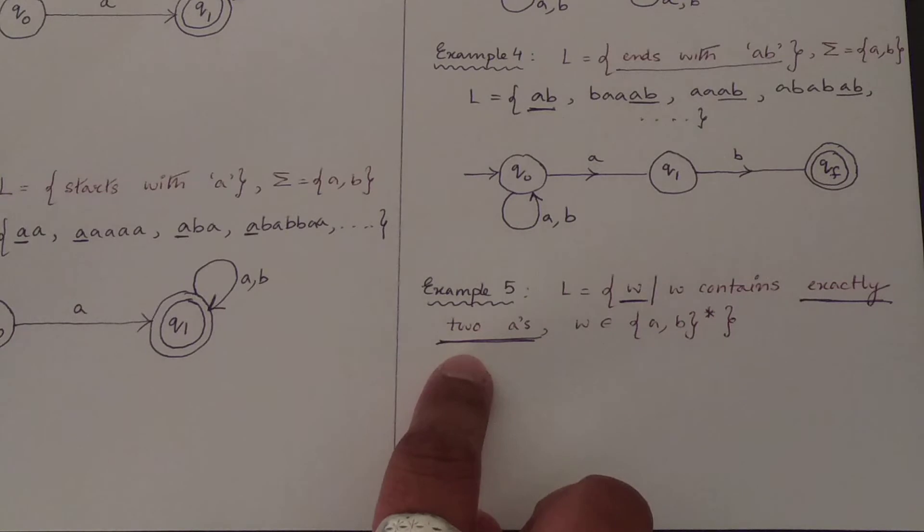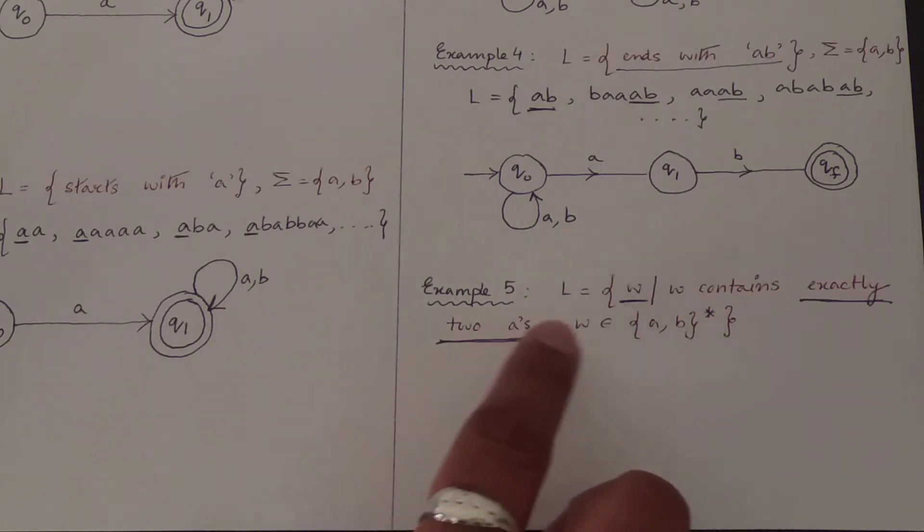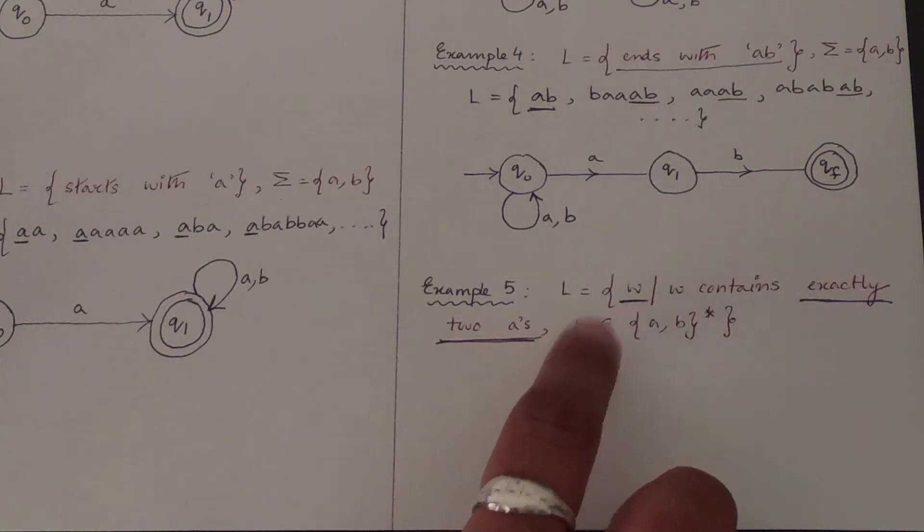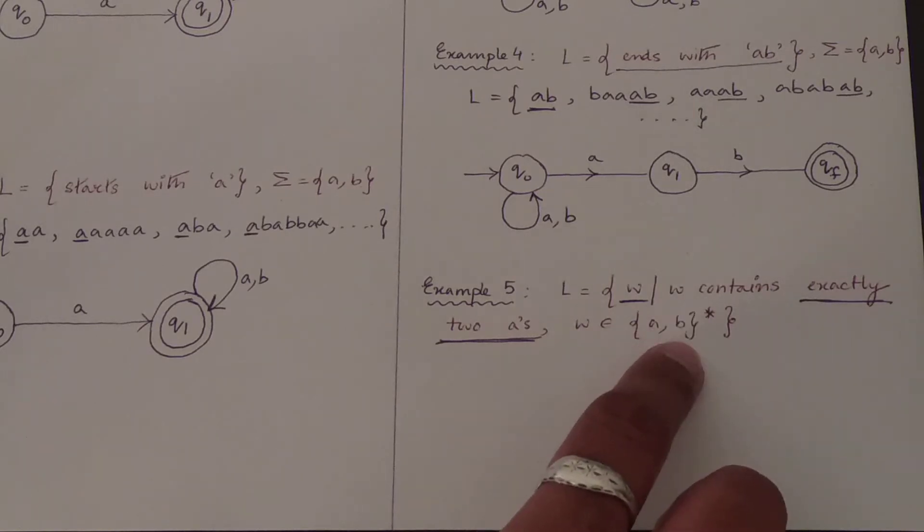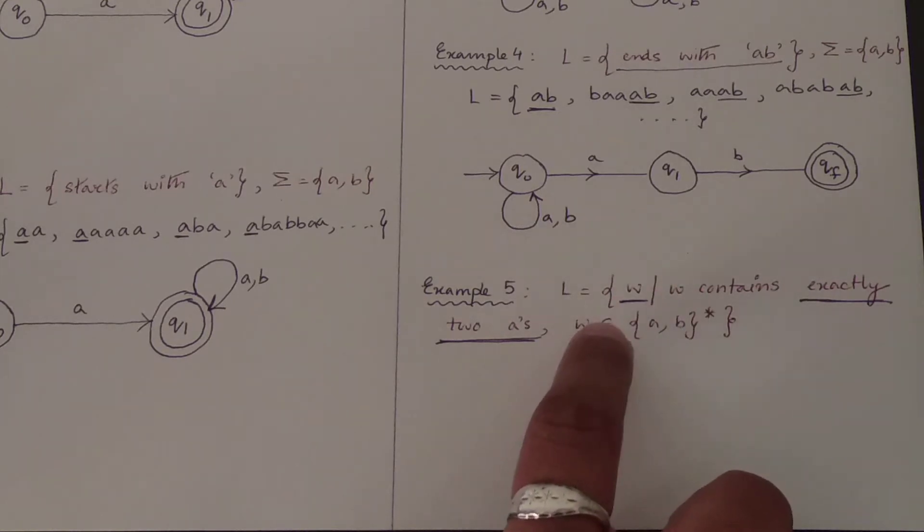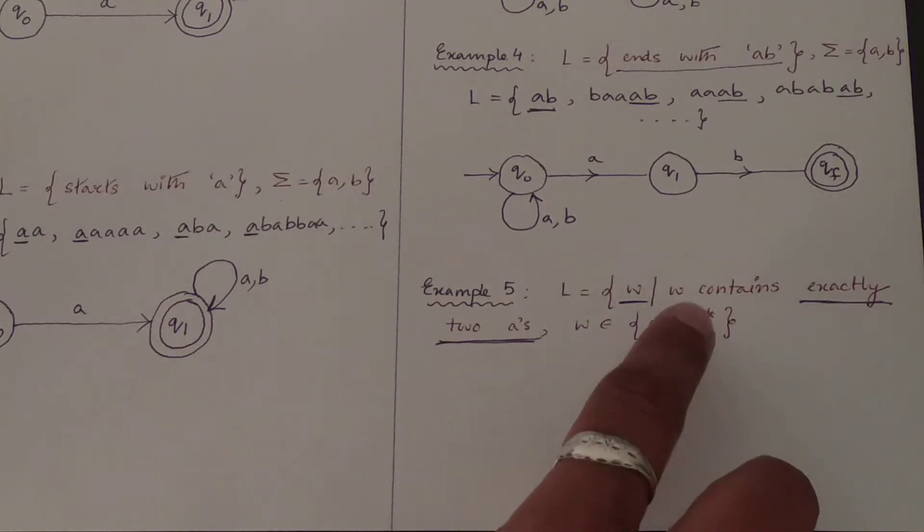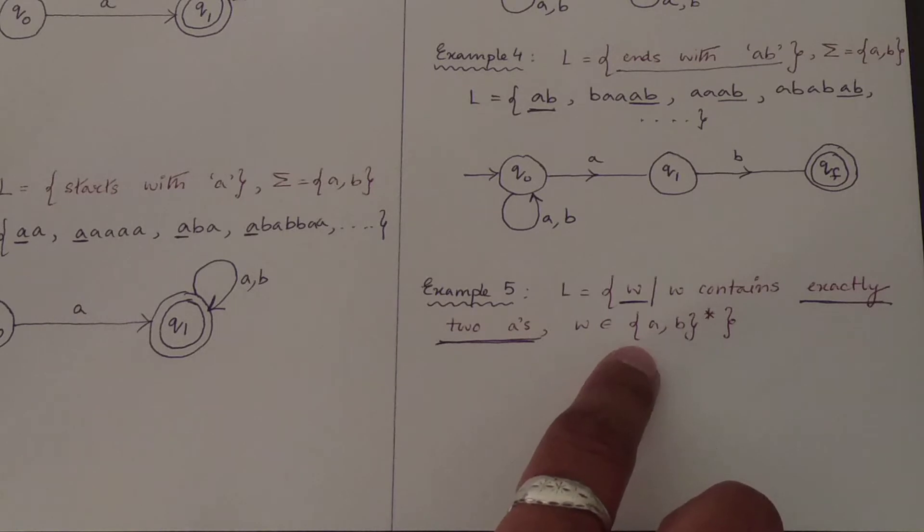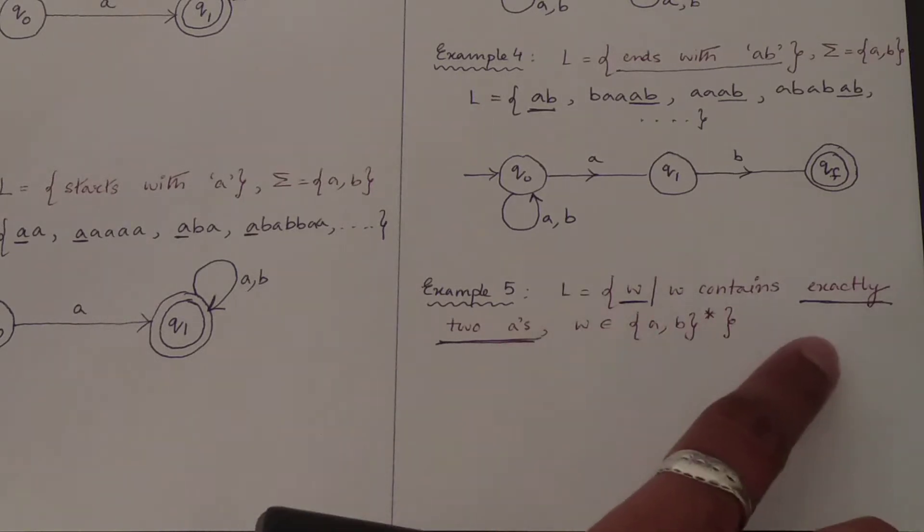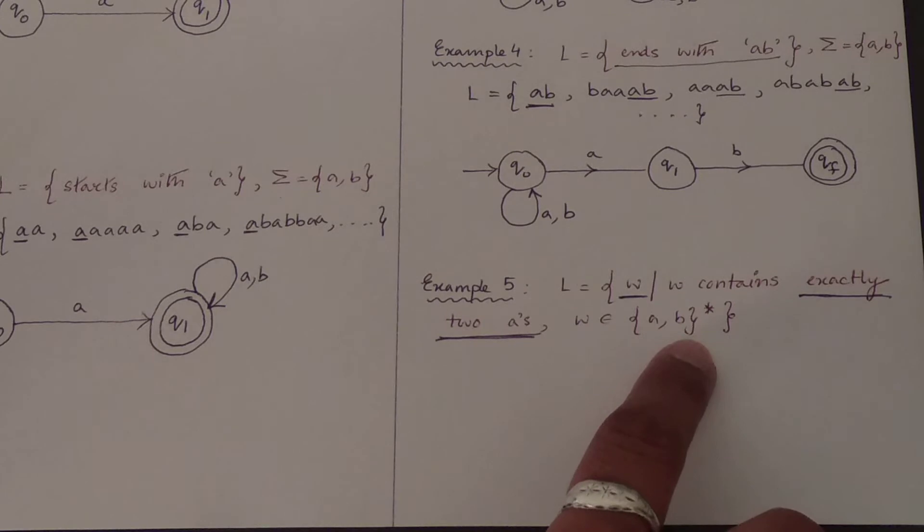Now this is telling that exactly two A's, that means this is the restriction part. Other than this, we are having W, where W belongs to A and B to the power asterisk. Asterisk means values start from 0 till N. So that means this W is a collection of strings which comprises of elements A and B and it can be of any format, but there is a restriction that only over A, exactly two A's. There is no restriction for B.